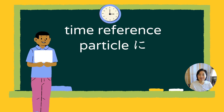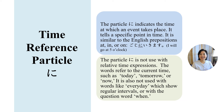The time-reference particle に indicates specific times at which an event takes place. It is similar to English prepositions like at, in, or on. So 'at 5 o'clock' is 五時に, and for periods like 'in June' or days of the week such as 'on Sunday,' you use this time-reference particle に. However, not all time expressions require the particle に, so in today's lesson we will explore these rules to ensure you use the particle に correctly.